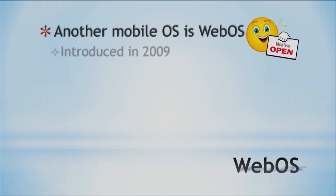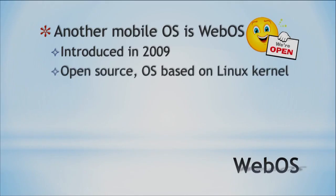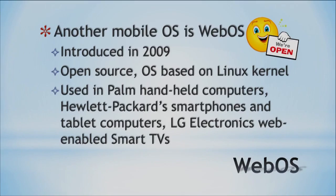This next one is called WebOS. It came about in 2009 and it's open source, meaning many different programmers work on this operating system or software. It's based on Linux, which is another open source operating system that many people work on and create. There's a company called Palm that used it in handheld computers, and also Hewlett Packard's smartphone, LG Electronics, and web-enabled smart TVs. It kind of jumped around at different companies as they acquired other companies.